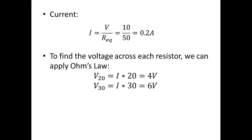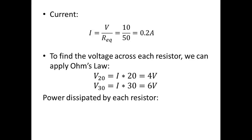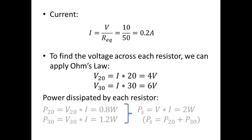We can also find the voltage across each individual resistor. The same current flows through both the 20 ohm and 30 ohm resistors, so if we multiply the current by the value of each resistor we get the voltage across each one. We have 4 volts dropped across the 20 ohm resistor and 6 volts dropped across the 30 ohm resistor. We can also find the power dissipated by each resistor using voltage times current: the 20 ohm resistor dissipates 0.8 watt and the 30 ohm resistor dissipates 1.2 watt.